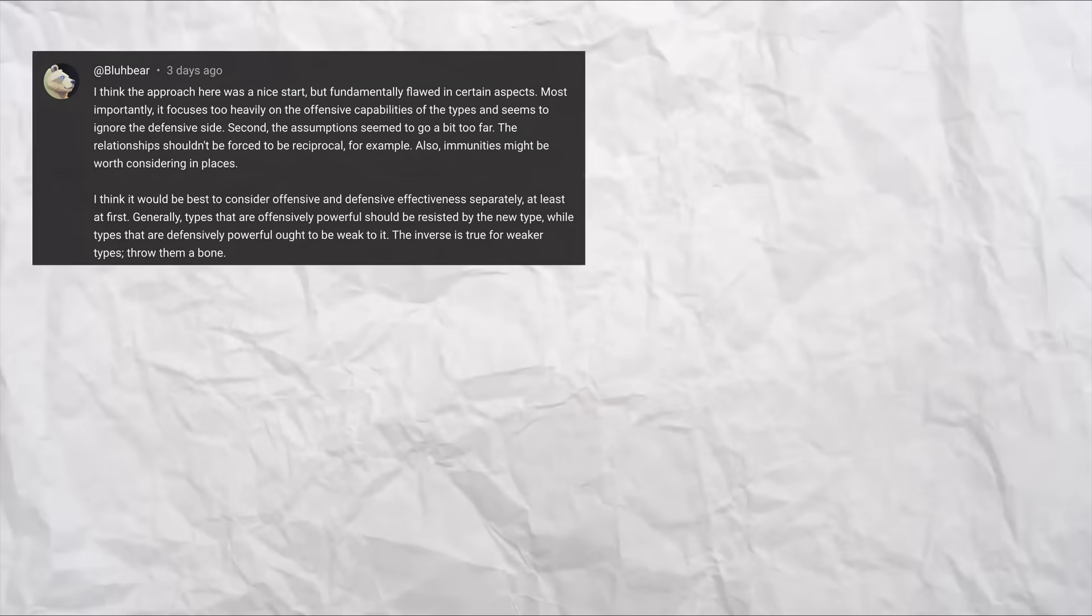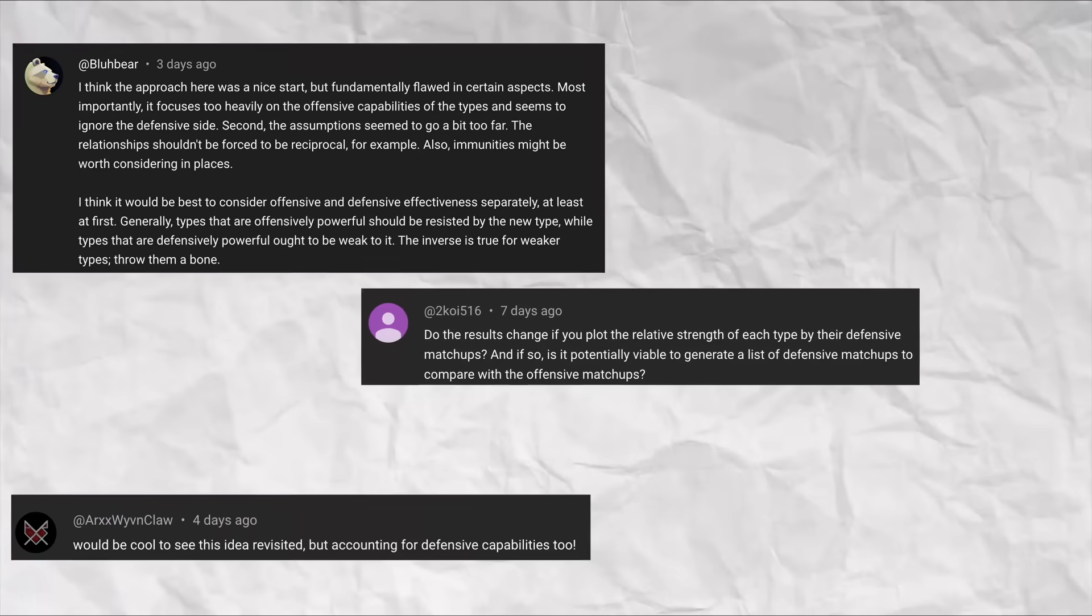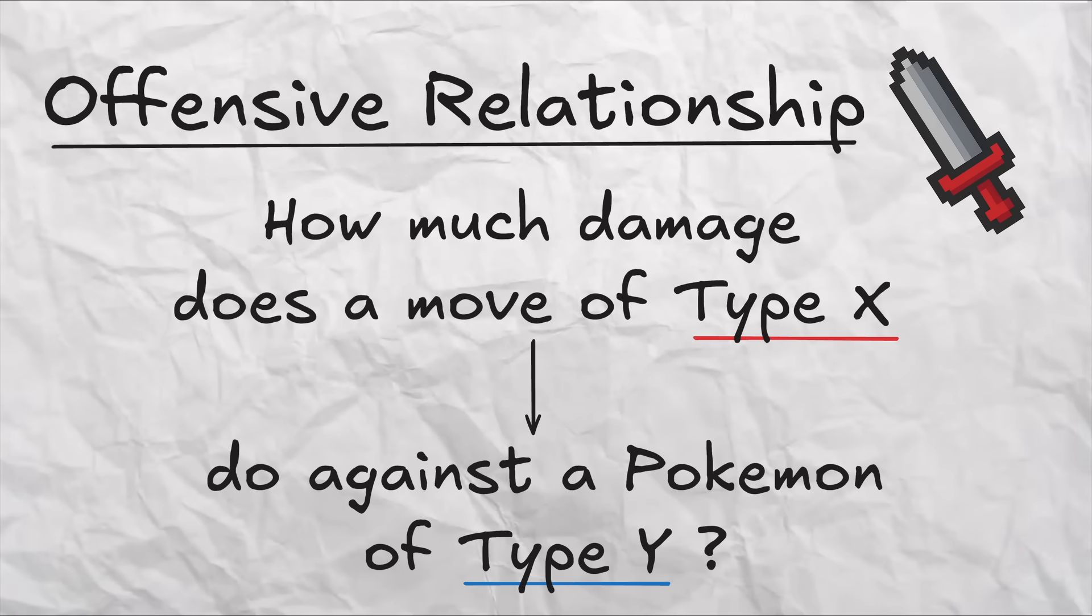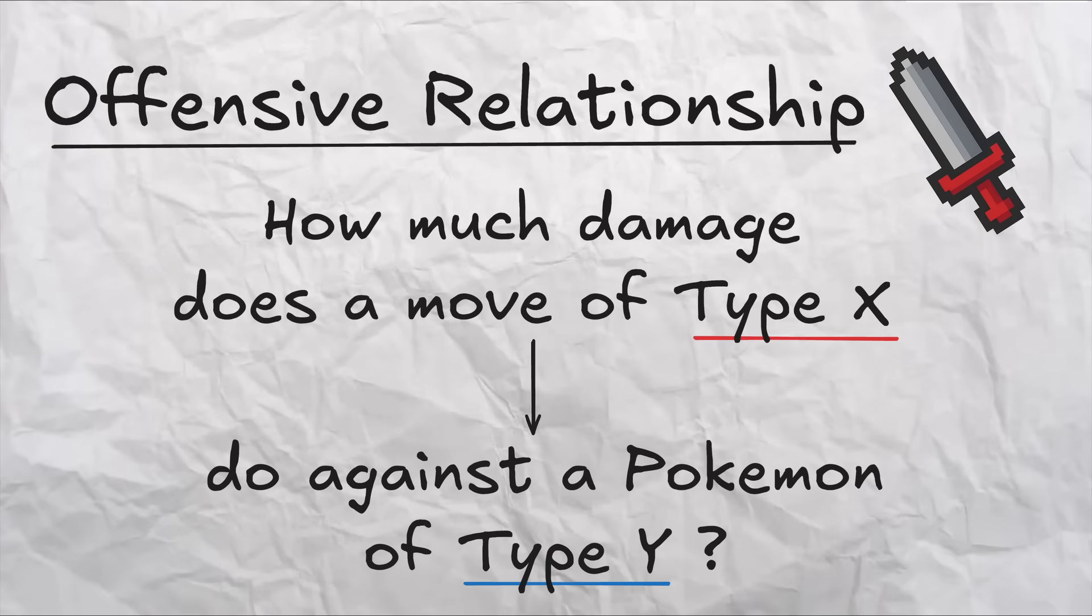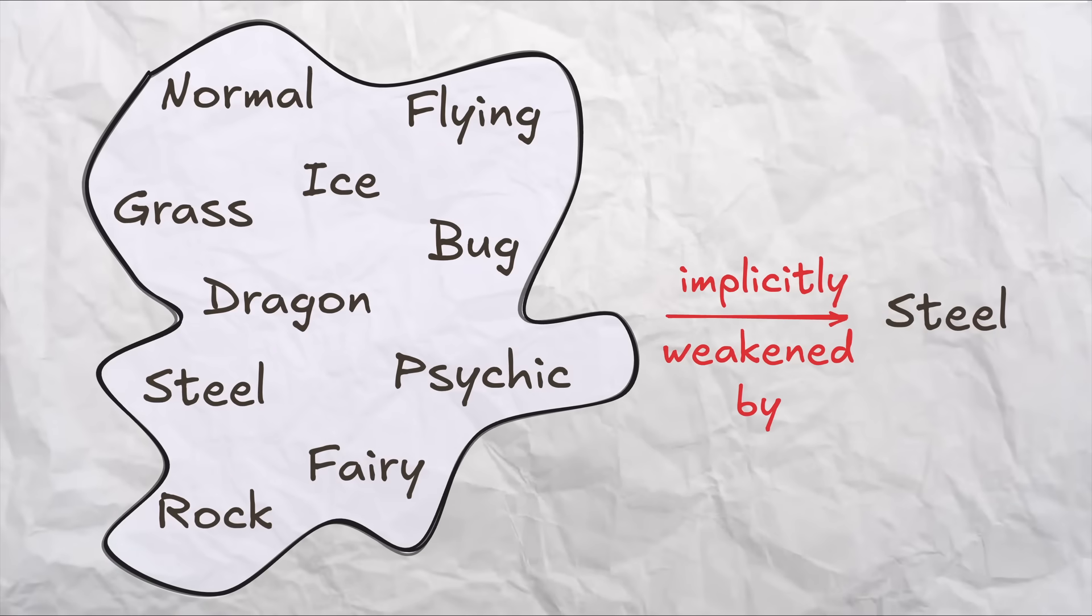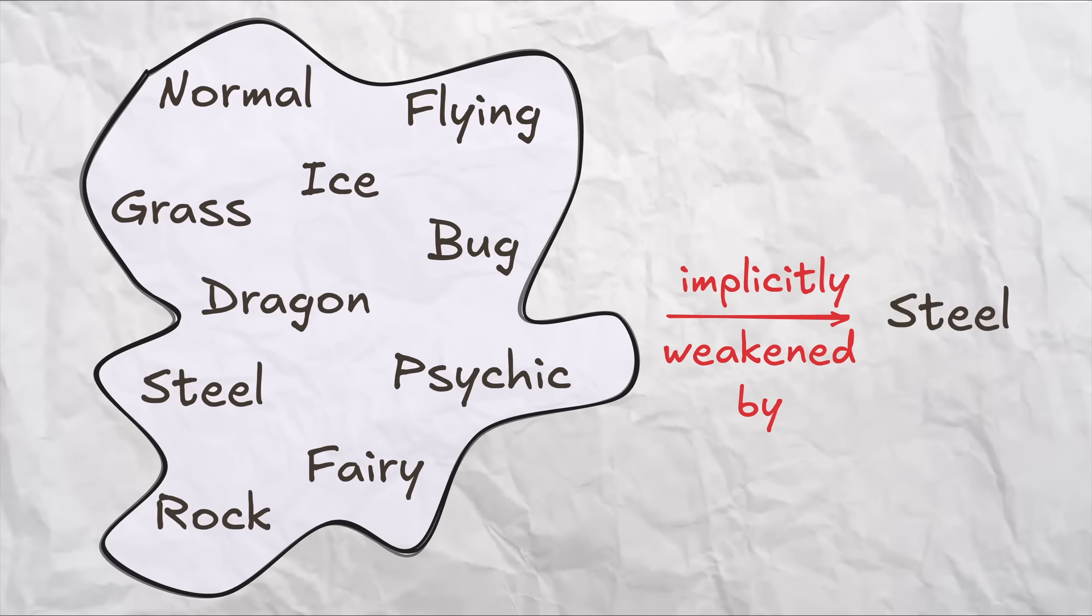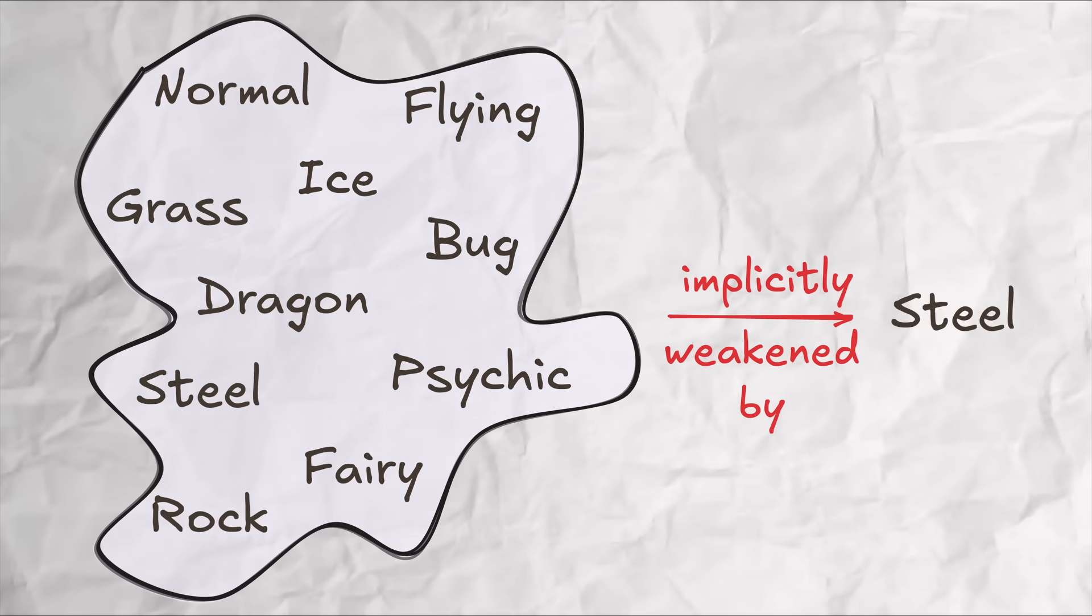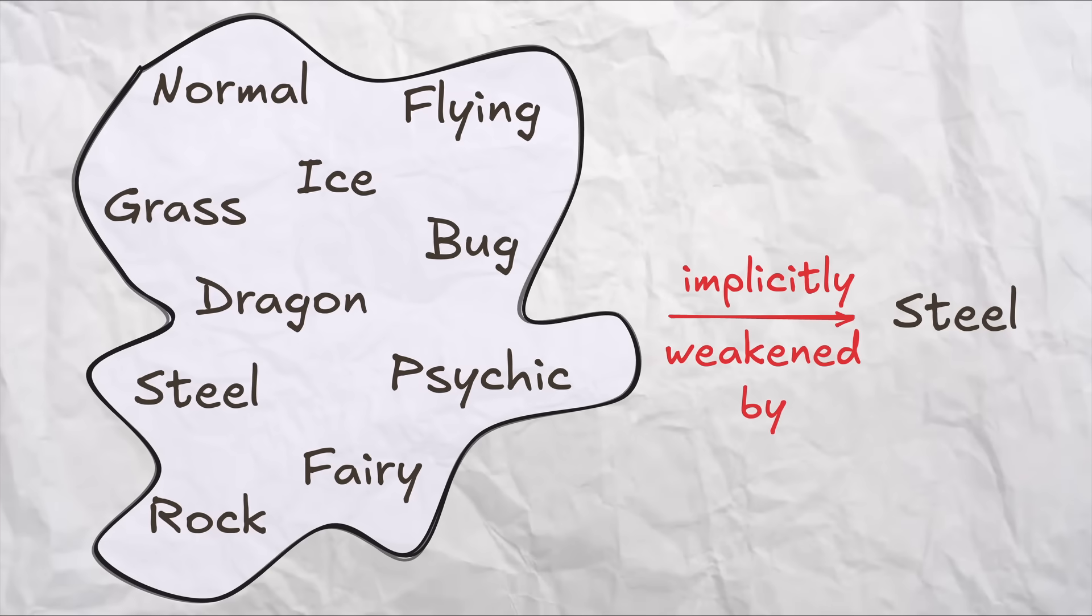As many of you correctly pointed out, it's because we only explicitly took into account offensive relationships, i.e. how effective an attack of a certain type is against a pokemon of a different type. I'll quickly note here that this math does implicitly take defensive relationships into account, but only by virtue of a type with many resistances, like steel, getting to slightly temper down the offensive strength of every other type.